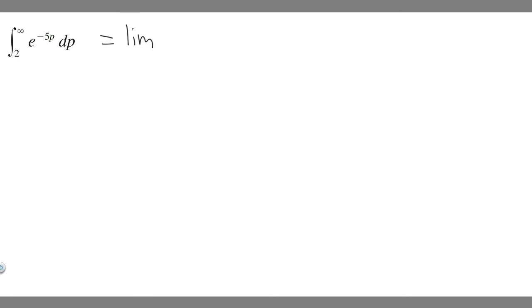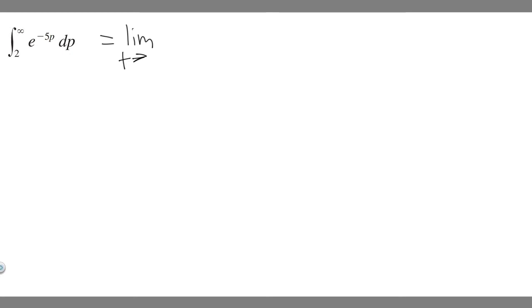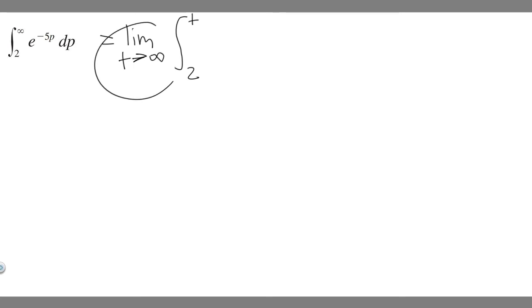So you're going to say it's equal to the limit, and then choose a variable — I'm just going to say t. So as t approaches infinity — because if you have an infinity as one of your bounds and a definite number like 2 as the other, you say as t approaches whatever it is. In this case it's positive infinity. Then you rewrite your integral from 2 to t of e to the minus 5p dp.